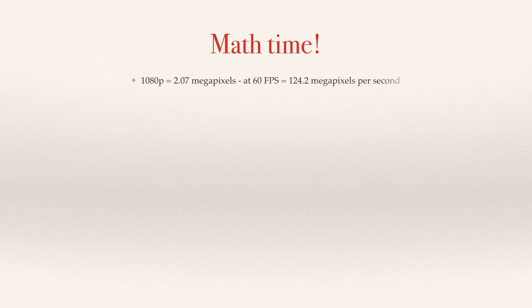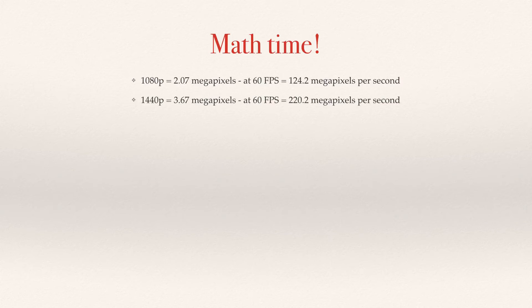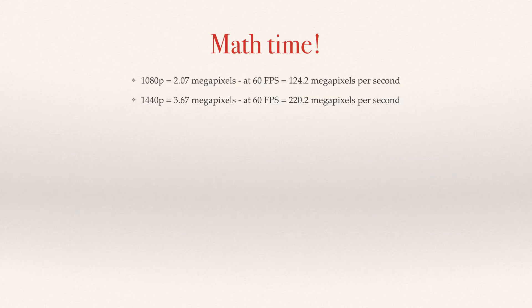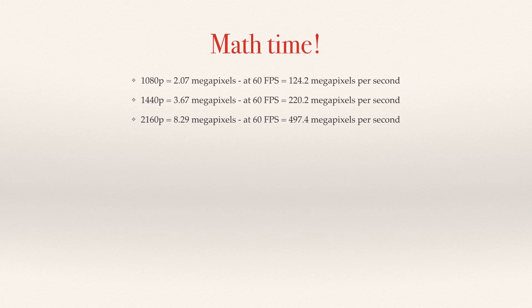1080p equals roughly 2.07 megapixels. At 60 frames per second, your GPU will need to render everything at 124.2 megapixels per second — that's a lot. Moving up to 1440p, which equals about 3.67 megapixels, at 60 fps your GPU will have to render 220.2 megapixels per second. And for 4K — which is all the buzz nowadays — a 4K resolution is an 8.29 megapixel image. At 60 frames per second, your graphics card needs to be powerful enough to render almost 500 megapixels per second. As you can see, the numbers start climbing dramatically, and we're only considering single monitor setups.